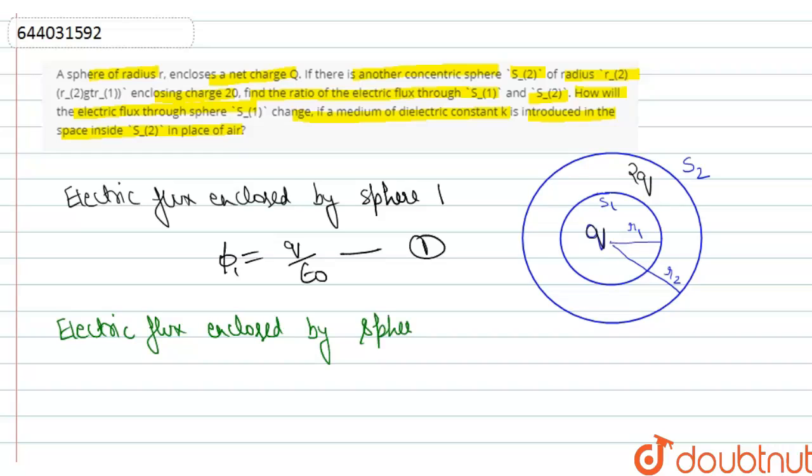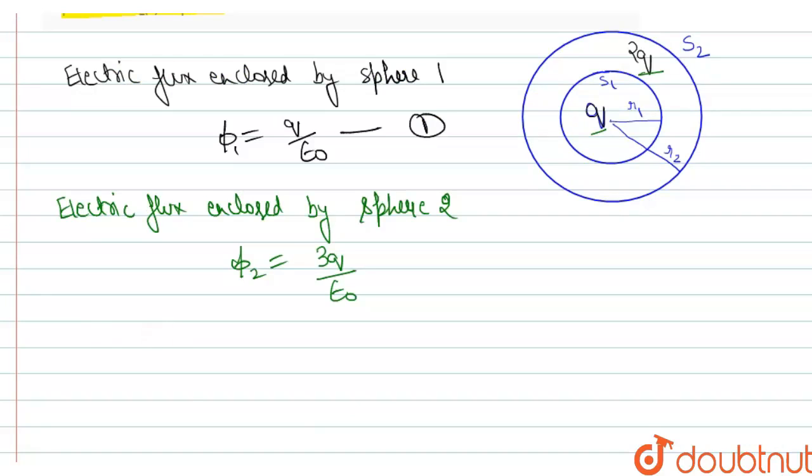And for sphere 2, phi 2 is equal to 2Q by epsilon 0, as this charge 2Q and Q come under the second sphere. So the ratio of S1 to S2 is equal to 2Q by epsilon 0.